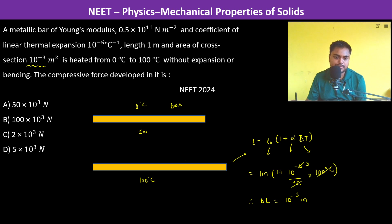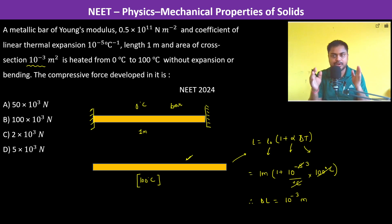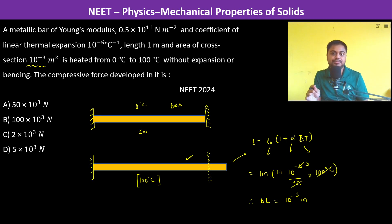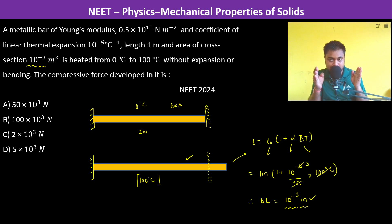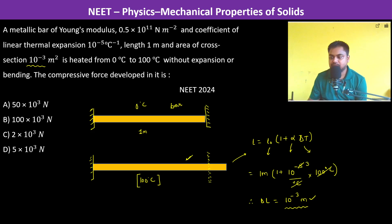The bar is supposed to be at this expanded length at 100°C, but since we have fixed the bar and not allowed any expansion or compression, the bar is kept at its original length only. This means the bar is effectively compressed by 10⁻³ meters, so this is a compression case.